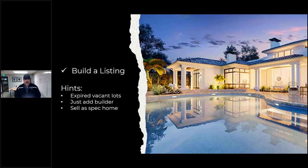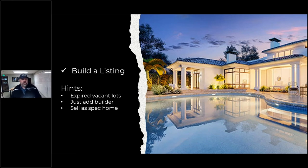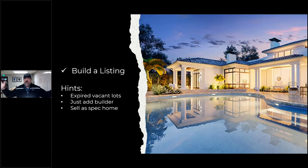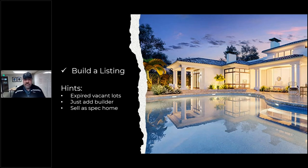A harder one is what I call building a listing — creating your own listing. Go in and look for vacant lots that have expired, then go back to your builder friend and say, 'Can you build a house on that lot?' If the vacant lot was listed at $50,000 and you can build for $200,000 to $250,000, that makes it $300,000. Approach the lot owner and say, 'I want to create a spec home, put out a four-by-eight sign with a potential floor plan as a to-be-built home.' You can actually create your own listings by incorporating a builder and a vacant lot.